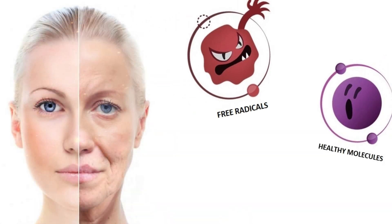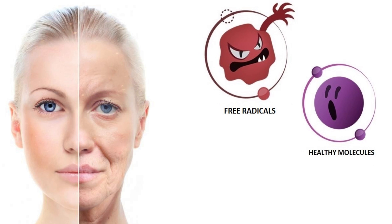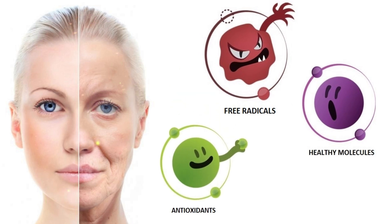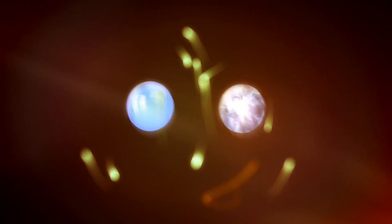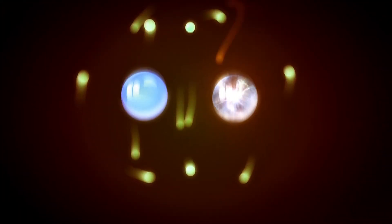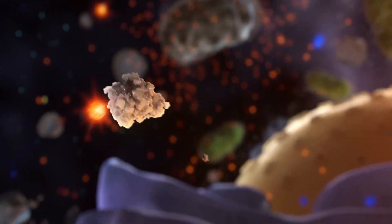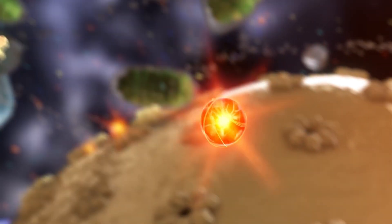Hello dear subscribers, many of us have heard about the dangers of free radicals and the importance of antioxidants for our organisms. Let's talk about it in this very video. Free radicals are molecules that have an unpaired electron in their outer shell. They are very reactive and can chemically react with other molecules to find their electron pair and become stable.